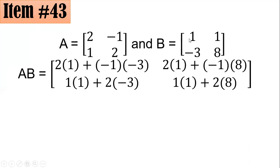Next, we will multiply the second row of A with the elements in the first column of B. So 1 times 1 plus 2 times negative 3. Next, we will multiply the first row of A with the second column of B. So 2 times 1 plus negative 1 times 8, which is found here.